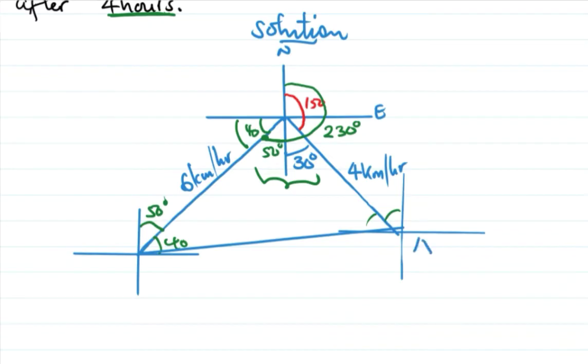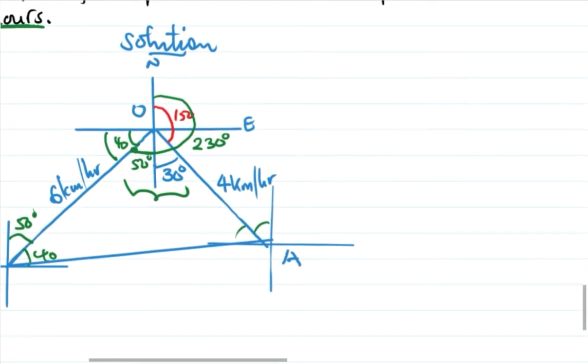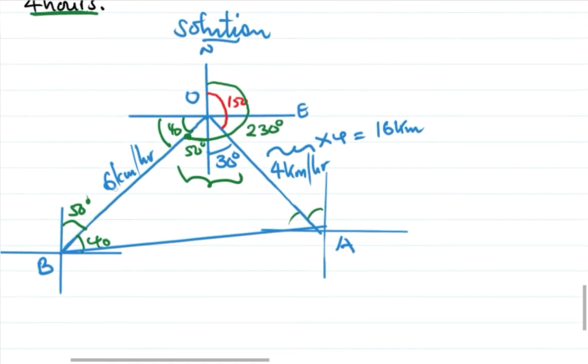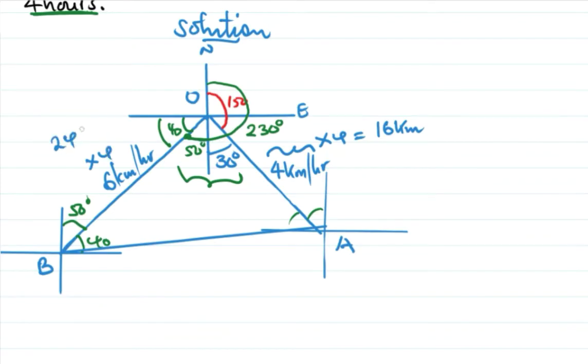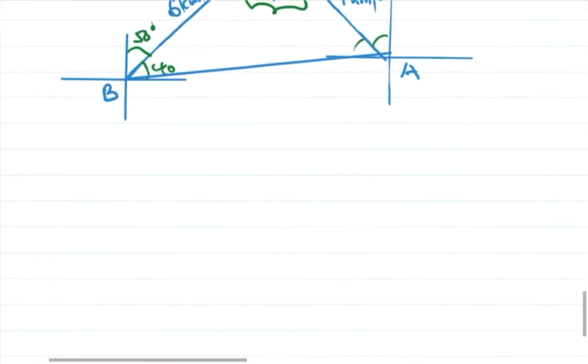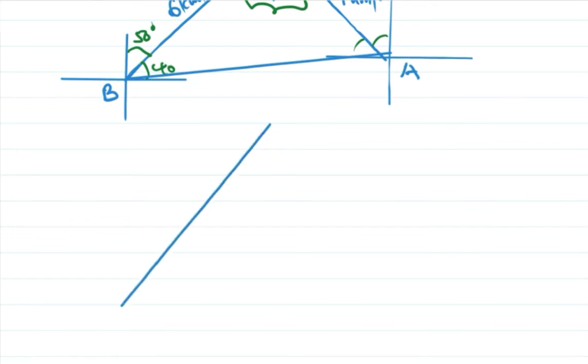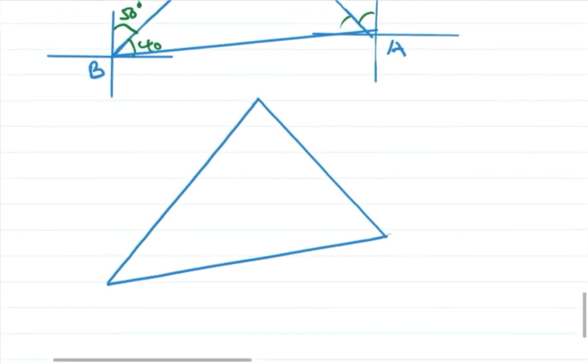So we have plane A, this is plane B, and this is our original point. We can have our triangle after four hours.